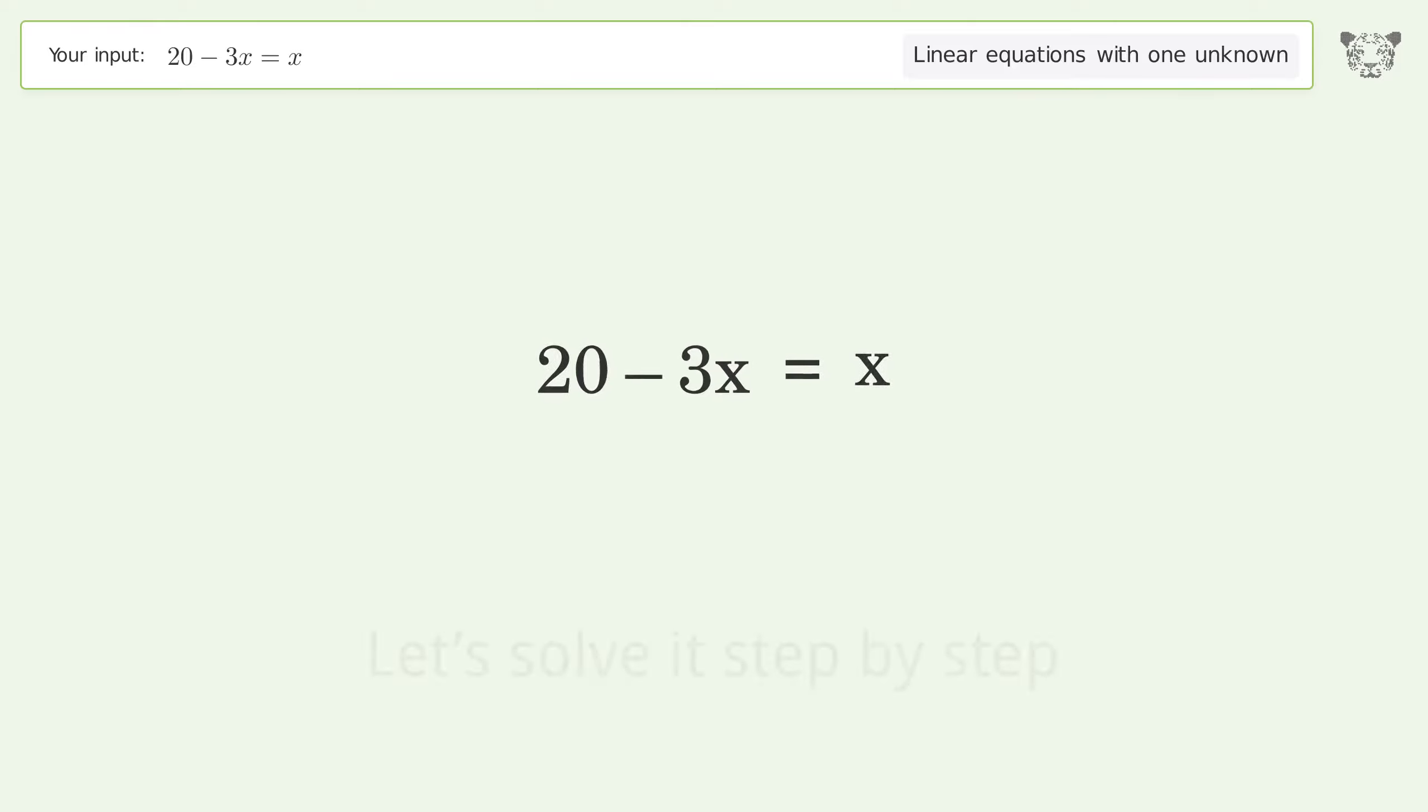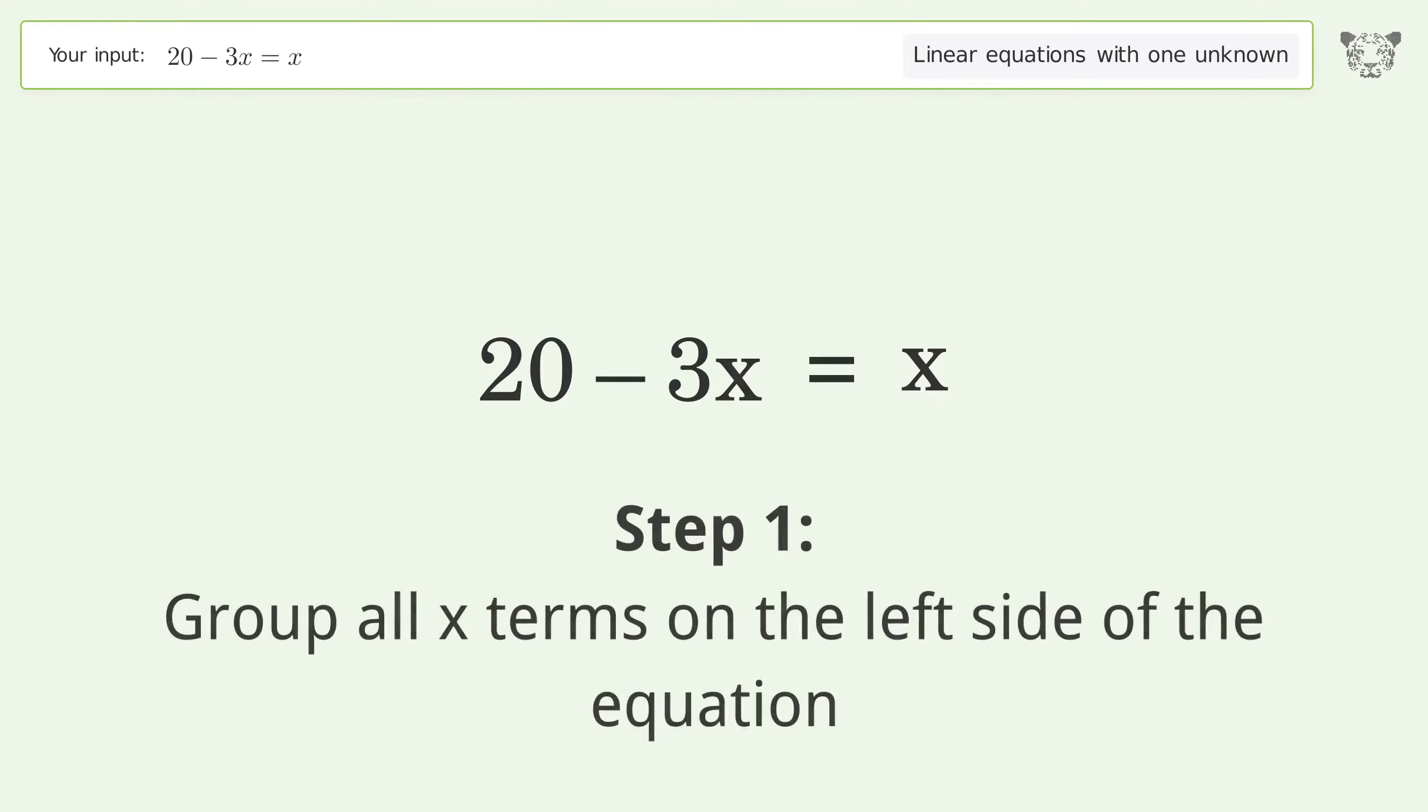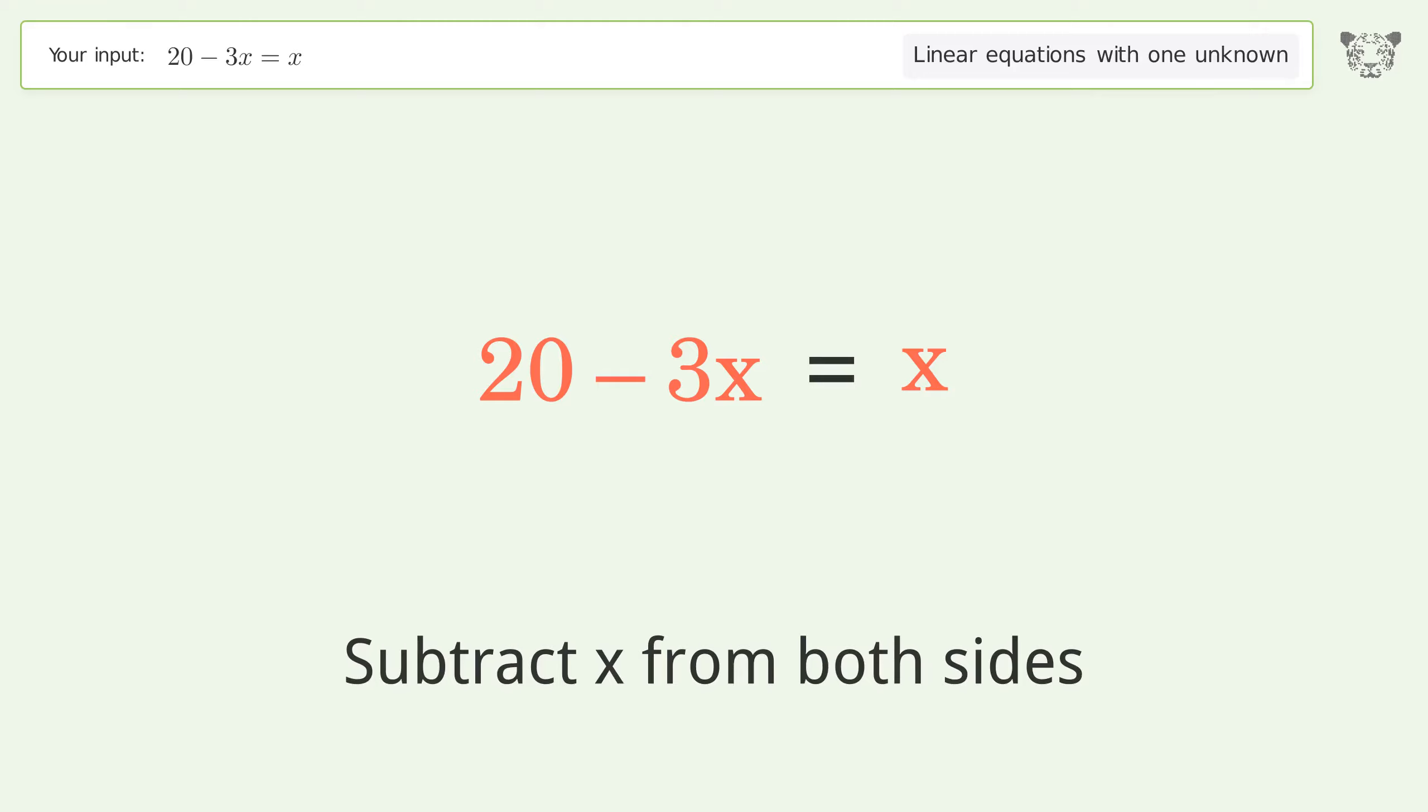Let's solve it step by step. Group all x terms on the left side of the equation. Subtract x from both sides. Group like terms.